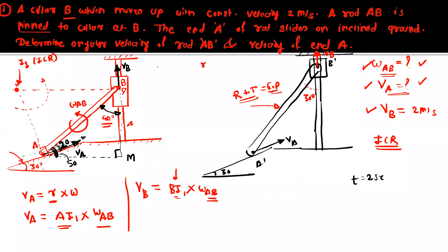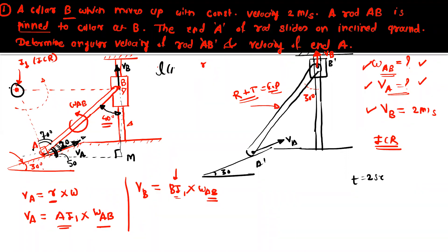In triangle AI1B, angle at A is 70 degrees, and since line BI1 is perpendicular to VB, the angle at B is 90 − 40 = 50 degrees. The side AB = 1.5 meters is given. The third angle theta = 180 − 70 − 50 = 60 degrees. Using the sine rule: AB/sin60 = AI1/sin50 = BI1/sin70. From this, AI1 = (1.5/sin60) × sin50 = 1.327 meters, and BI1 = (1.5/sin60) × sin70 = 1.627 meters.